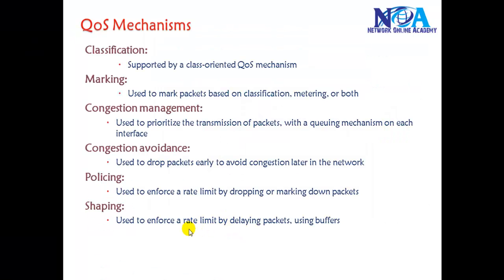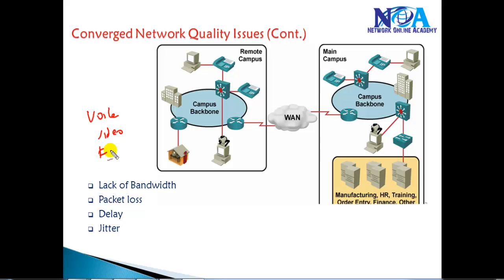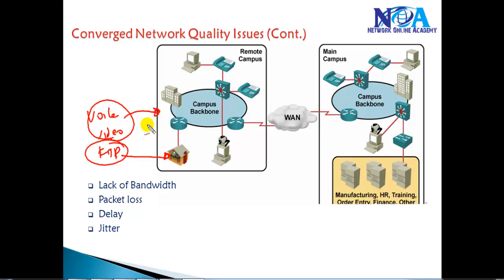In this video we'll talk about some of the QoS mechanisms which can be used to overcome network issues. When working in a converged network, you have voice traffic, video traffic, and maybe FTP traffic. There is a possibility that your FTP traffic may utilize almost all the available bandwidth, and your voice traffic may get delayed or dropped — and that's something we don't want.